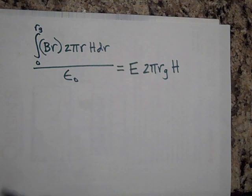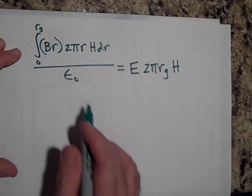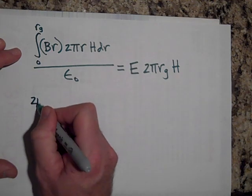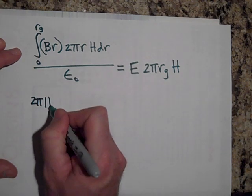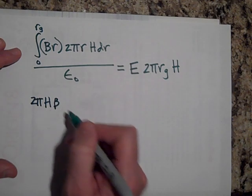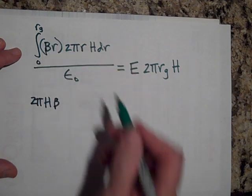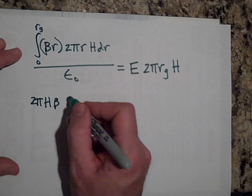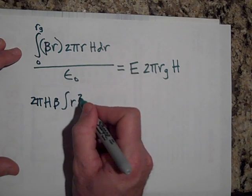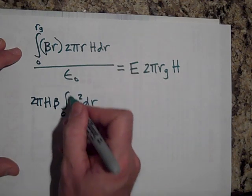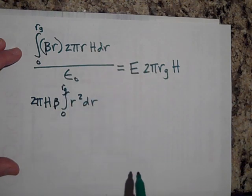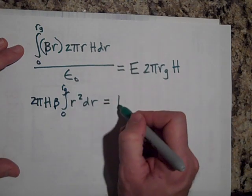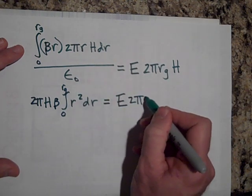Okay, so what I'm going to do is I'm going to take this integral then. Let's do, I can pull out all the constants. So I have 2 pi H beta, I think I've been calling that B, but it's beta. So 2 pi H beta, and then that's going to be R squared dR from 0 to R_g. And that's equal to, I'll bring the epsilon naught over on the other side, just to keep it even.